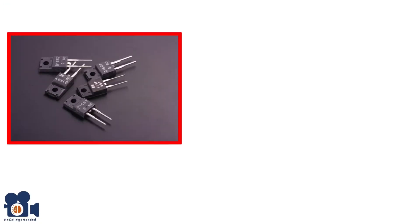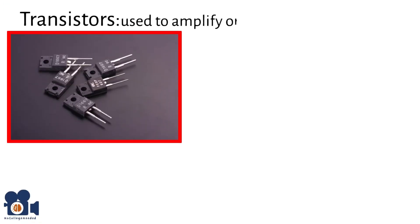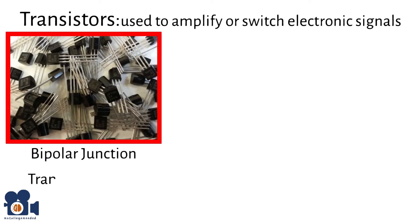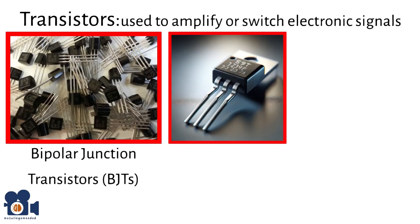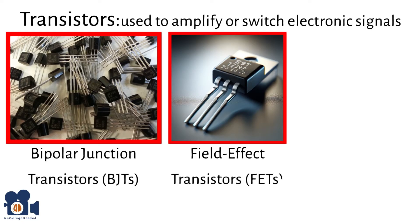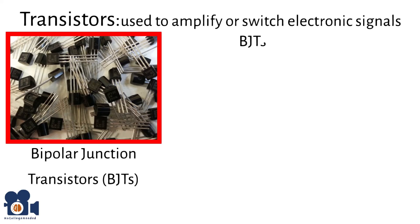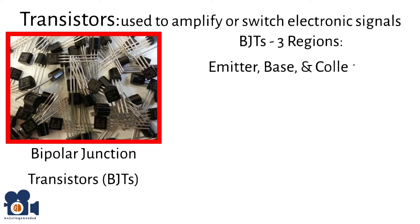Transistors are semiconductor devices used to amplify or switch electronic signals with two main types: bipolar junction transistors (BJTs) and field effect transistors (FETs). BJTs amplify current and consist of three regions — the emitter, base, and collector — where small changes in the base current control larger changes in the collector current.